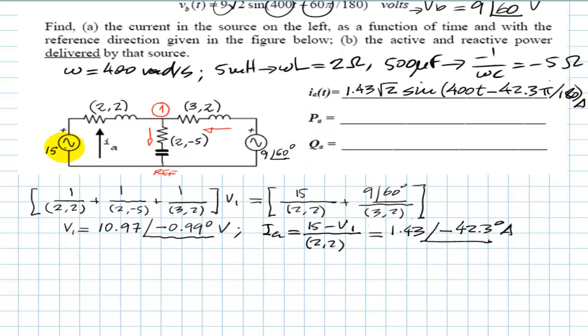Let's find the power delivered by that source. That's given by the Steinmetz formula: the voltage of source Va times the conjugate of the current in the source. That is 15∠0° multiplied by 1.43 with the angle changed sign, positive 42.3 degrees.